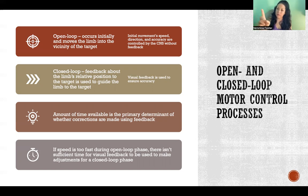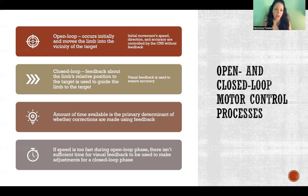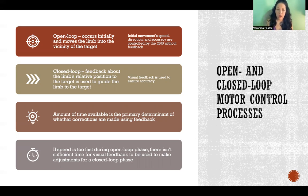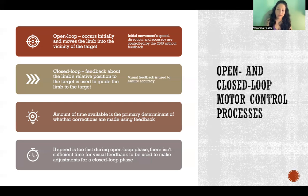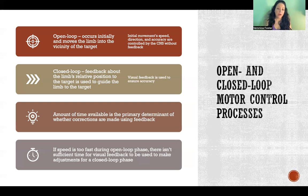As I get closer to the target, I use visual feedback about where my finger is in space relative to the target, going through closed loop to adjust accuracy and touch the target accurately. The amount of time available is the primary determinant of whether corrections are made using feedback. If I move too quickly, I won't be able to use sensory feedback to make adjustments and be accurate. The slower I go, the more accurate I'll be because I'll have more time for sensory feedback to make corrections. If speed is too fast during the open loop phase, there isn't sufficient time for visual feedback to guide the closed loop.